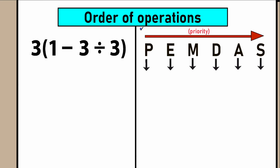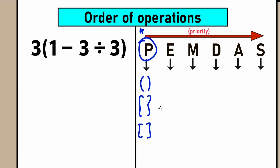Elements on the left side have higher priority than those on the right side. Let's start with the letter P, which stands for parentheses — these grouping symbols. The first thing when evaluating an expression with parentheses, exponents, multiplication, division, addition, and subtraction is to find our grouping symbols. Let's scan our question for parentheses: we have parentheses right here and right here.